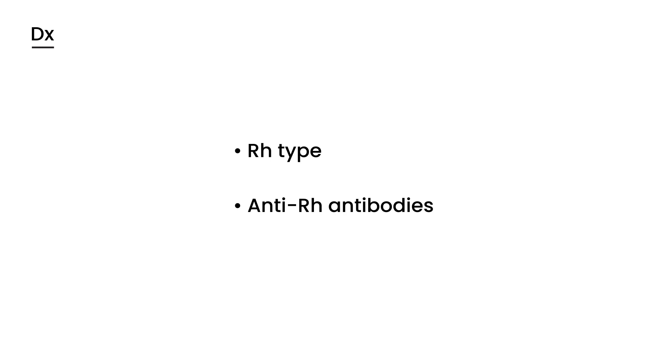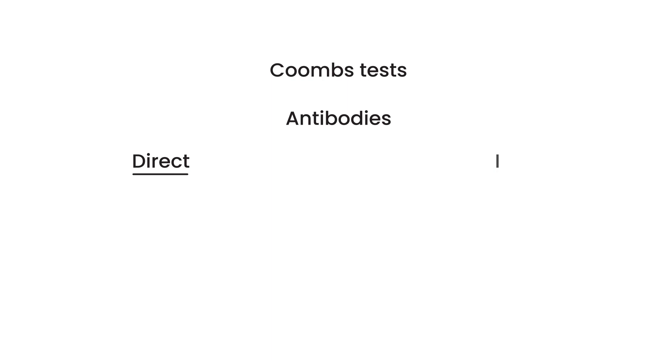There's a very important test called a Coombs test. The Coombs test essentially is a test that checks to see if the blood contains certain antibodies. If a person has antibodies in the blood, particularly the mother, they can attack and destroy the fetal red blood cells. There are two types of Coombs test: a direct Coombs test and an indirect Coombs test.